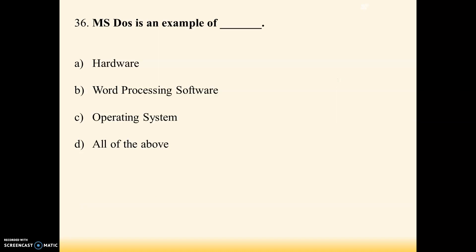Next question: MS-DOS is an example of — hardware, word processing software, operating system, all of the above. Answer is operating system — MS-DOS is an operating system. Someone may get confused between word processing software and operating system; word processing software is MS-Office, not MS-DOS.